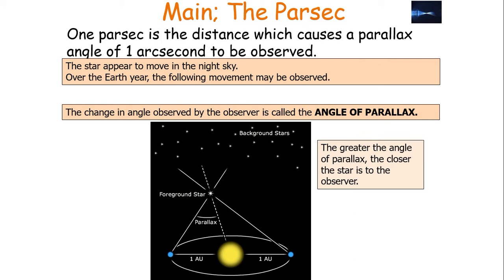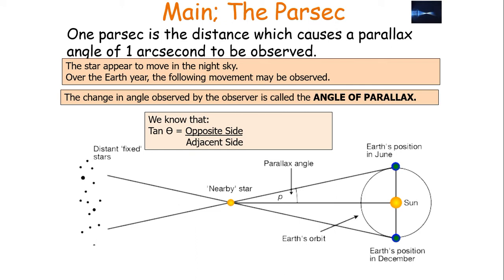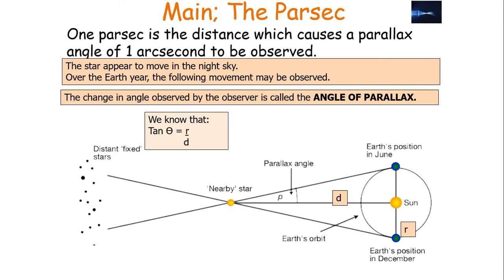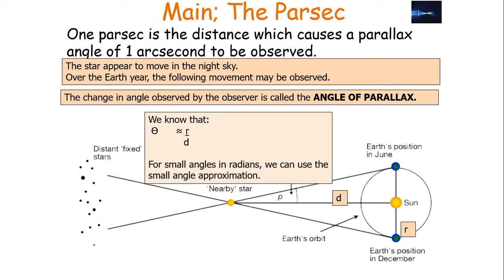The greater the angle of parallax, the closer the star is to the observer. We can consider a right-angled triangle that forms over half the Earth's orbit. From trigonometry — SOHCAHTOA — tan theta is equal to the opposite side divided by the adjacent side of the right-angled triangle, which in this case is the radius of the orbit divided by the distance between the Earth and that particular star, so tan theta equals R over D. Here, R is the mean distance between the Sun and the Earth, so R is one astronomical unit. Therefore, theta is approximately equal to R over D when using the small angle approximation, which states that tan theta is approximately theta when using the angle in radians.